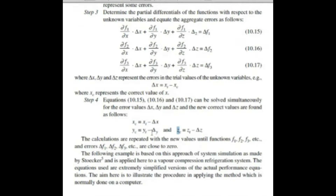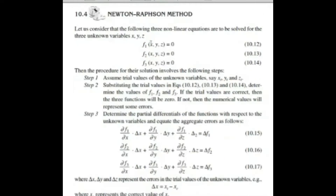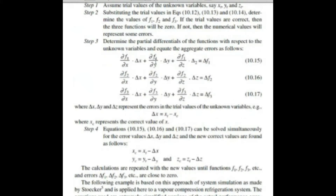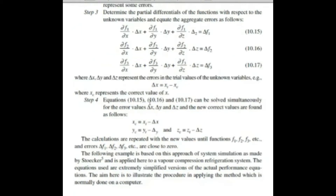Then put all the corrected values — x_c, y_c, and z_c — back into the original functions. If the values come out as zero, the answer is correct. If not, repeat the entire process again by solving for new delta f1, f2, and f3. This is how the Newton-Raphson method works.